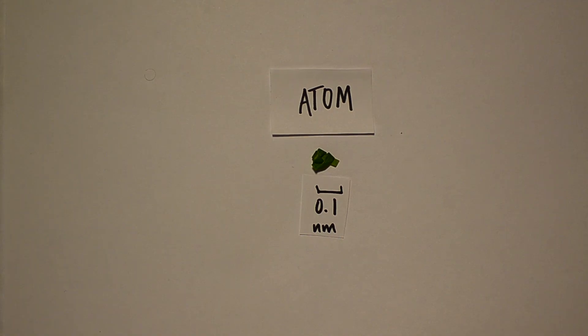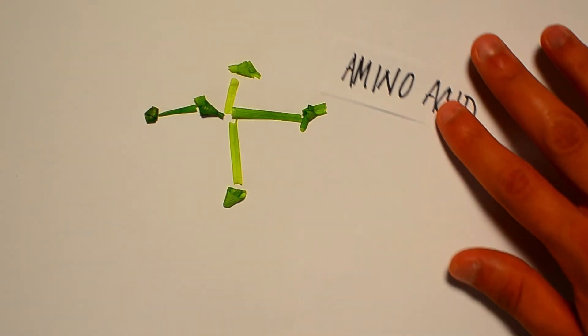And what about an amino acid made up of many atoms? Bigger, of course. About 0.8 nanometers in diameter.